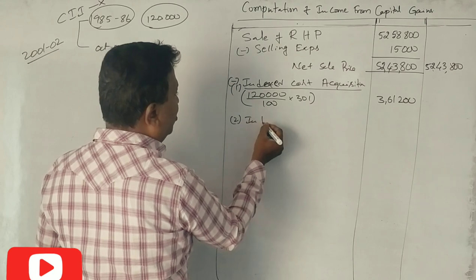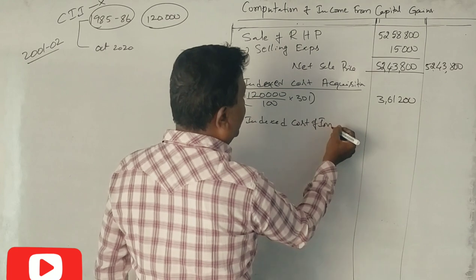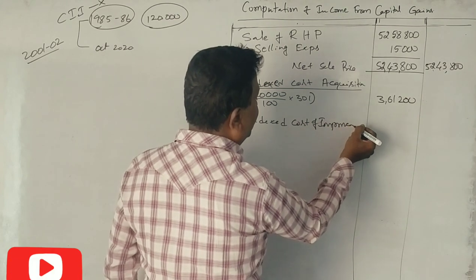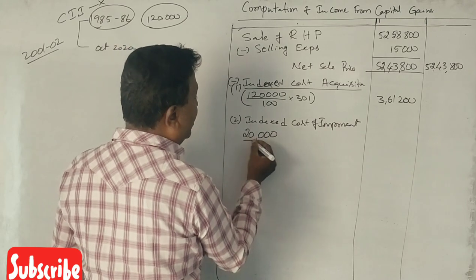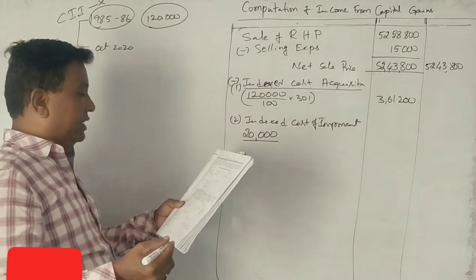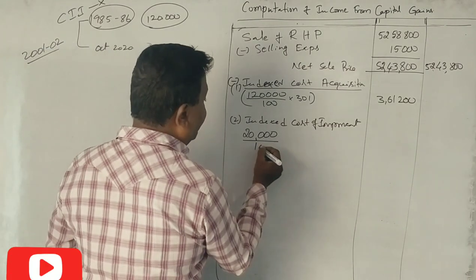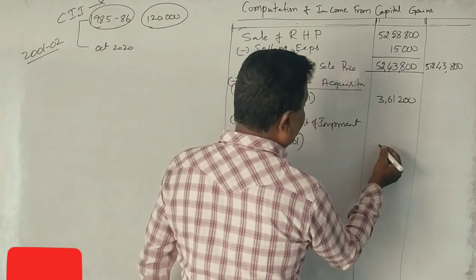That is the indexed cost of improvement. How much improvement? Rs. 20,000. The improvement year is 2002-03. Rs. 20,000 divided by 105 into 301. How much? Rs. 57,333.